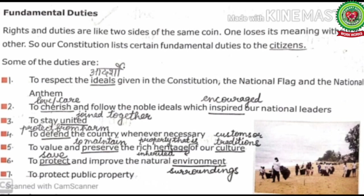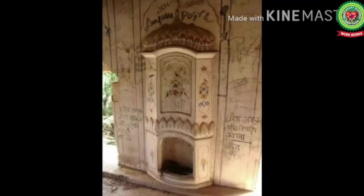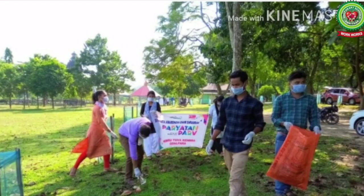Number five — to value and preserve the rich heritage of our culture. 'Preserve' means to maintain. 'Heritage' means property that is inherited. 'Culture' means customs or traditions. It is our duty to maintain our cultural heritage, such as the Taj Mahal, Agra Fort, and Qutub Minar. We can preserve it by not scribbling on walls, not throwing waste, and by participating in regular cleanliness drives.